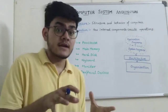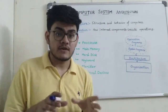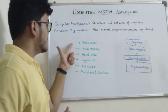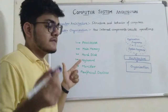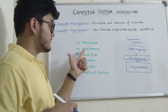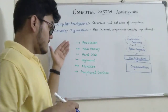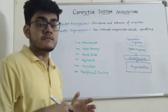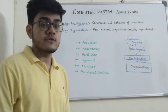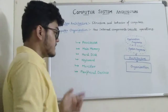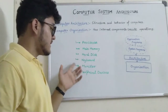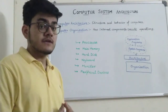You can think of computer architecture as the internal components, and computer organization is basically how these internal components are operating and executing operations. Here are some components of computer organization: the processor, which is used to compute operations; the main memory, which is basically the RAM; and the hard disk along with other peripheral devices that perform operations.